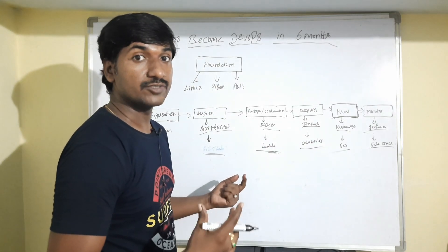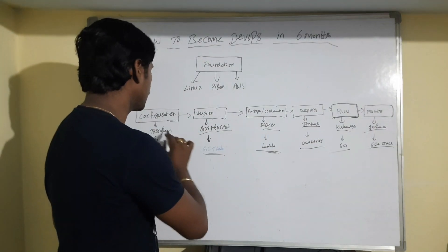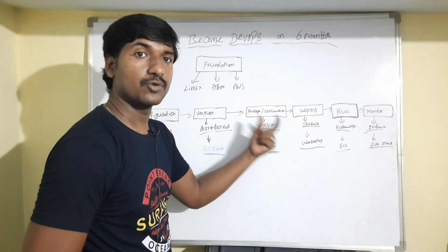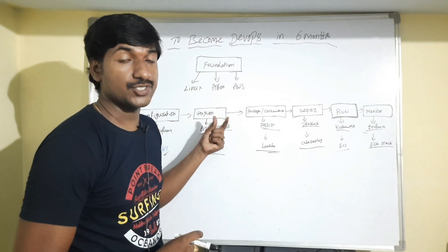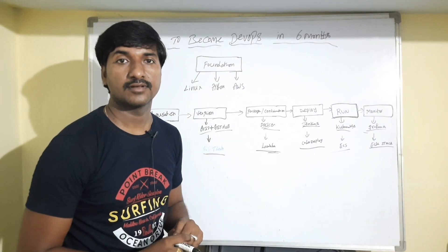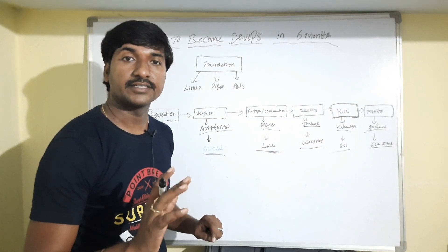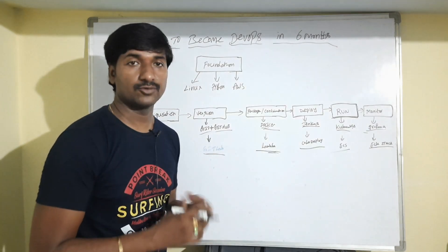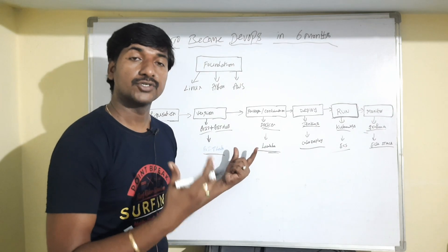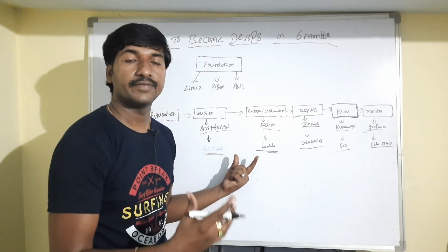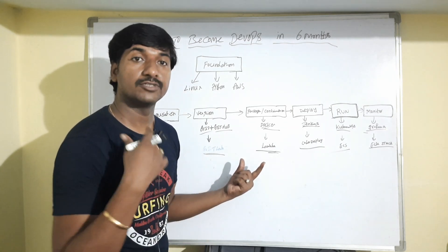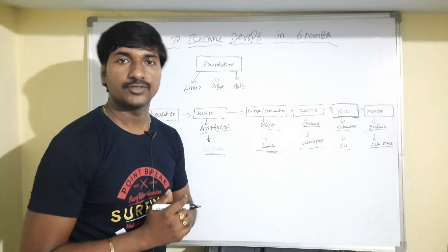Nobody knows what new tools may be introduced in the future, but as of now these are the most used tools for end-to-end automation of projects. Each tool takes approximately one month, so completing the full DevOps course takes around six months. You must practice 30 minutes to one hour per day. Without consistent practice, you cannot expect a job — not just in this technology, but in any technology. Practice on the same day you learn, and only then will you get a job after completing the course.